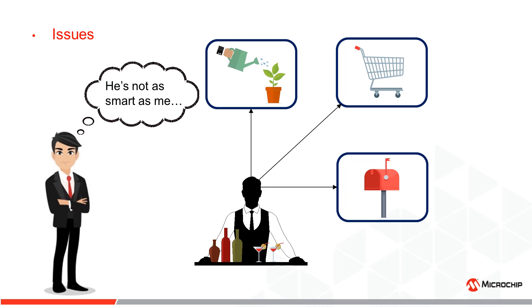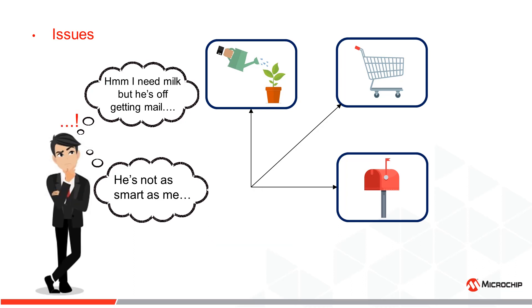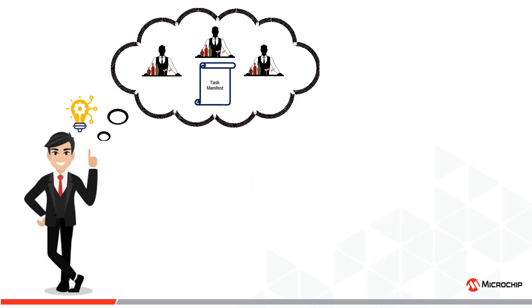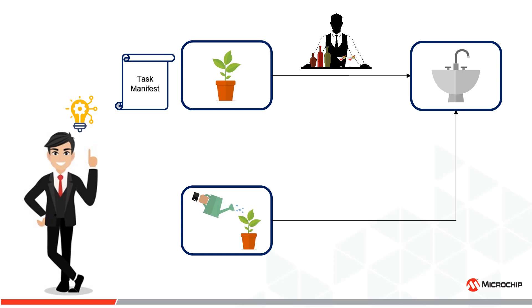This becomes a real issue when a more pressing task comes up, such as Harry running out of milk. It seems Harry didn't account for the fact that his tasks have a variety of conditions and circumstances that imply a level of priority or importance over each other. So Harry decides to hire a couple more butlers and puts up a task manifest. The task manifest includes a priority level for each task, an event that triggers each task, and the task itself with an associated source and destination. The manifest allows the butlers to figure out what needs to be done without interrupting Harry's work.